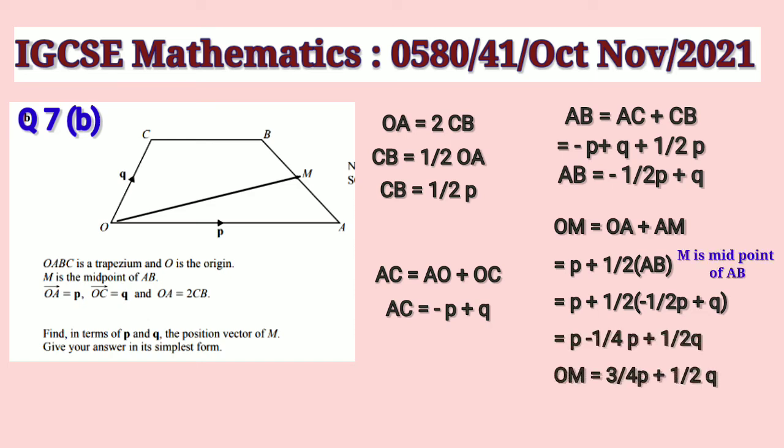AB which we got previously as minus half P plus Q. So OM is equal to P plus half into minus half P plus Q. This one further simplification gives the value of OM is equal to 3 by 4 P plus half Q.